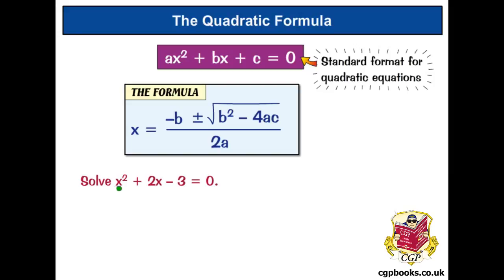So, what's a equal? Well, a is the number before x squared, but we haven't got one, so it must be 1x squared. So, a equals 1. b equals this number here, 2. And c equals minus 3.